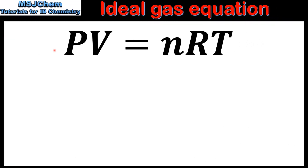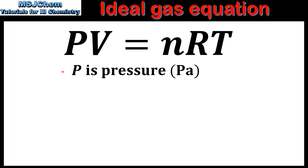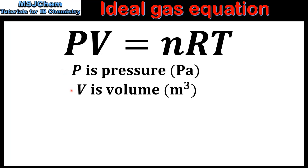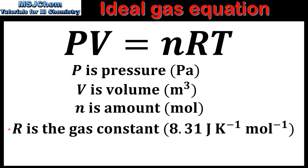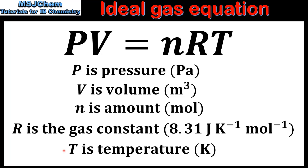So here we have the ideal gas equation which is PV equals nRT. P is pressure in Pascals. V is volume in meters cubed. N is amount in moles. R is the gas constant which has a fixed value of 8.31 joules per kelvin mole. And T is the temperature in kelvin.